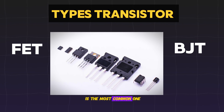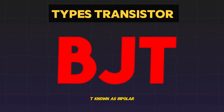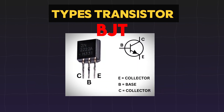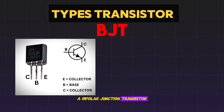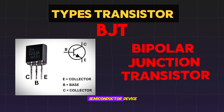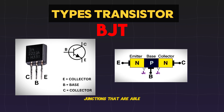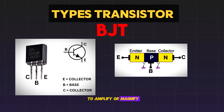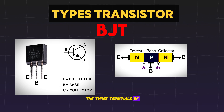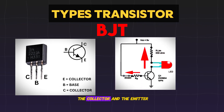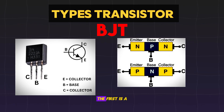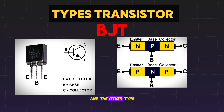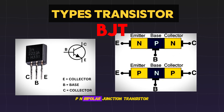The first type is the most common one, which is BJT, known as bipolar junction transistor. A bipolar junction transistor is a three-terminal semiconductor device that consists of two PN junctions that are able to amplify or magnify a signal. It is a current-controlled device. The three terminals of a BJT are the base, the collector, and the emitter. There are two types of bipolar junction transistors: the PNP bipolar junction transistor and the NPN bipolar junction transistor.